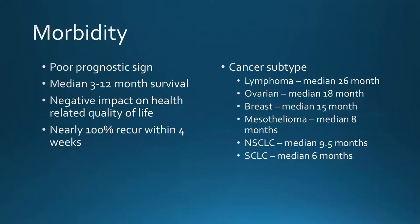A malignant pleural effusion is a poor prognostic sign. This is older data from the pre-immunotherapy era, but survival was typically three to twelve months upon presentation. About 100% can recur within about a month, so we follow these patients closely. Survival varies by cancer type: small cell lung cancer is about a median six months; lymphoma has a median 26 months. These numbers are expected to improve with modern immunotherapy.